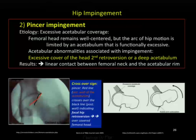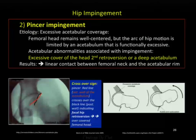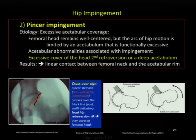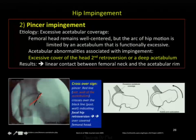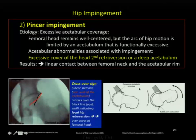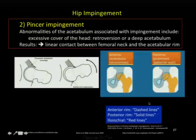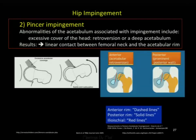Pincer impingement etiology is usually excessive acetabular coverage. The femoral head remains well-centered, but the arc of motion is limited by a functionally excessive acetabulum. Acetabular abnormalities associated with impingement are usually retroversion or a deep acetabulum. The classical x-ray diagnosis is when the anterior wall of the acetabulum overlaps the posterior wall, indicating focal hip retroversion.